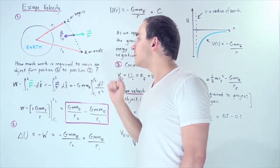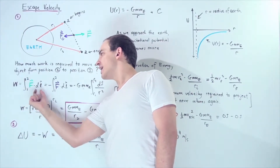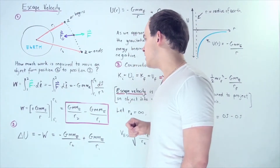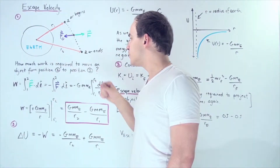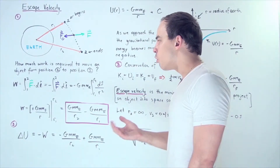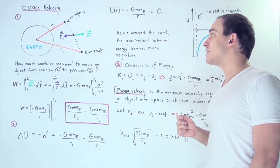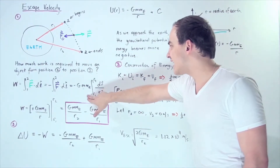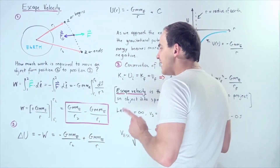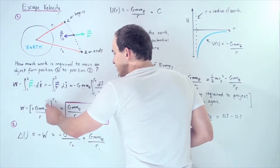The work done by the object going from position 1 to position 2 is equal to the integral from 1 to 2 of the dot product. The green force equals the negative of the purple gravitational force, so we plug in negative FG. Recall the law of universal gravitation gives us G times mass of the object times mass of the Earth divided by the square of the distance. Integrating this, the integral of 1 over R² gives negative 1 over R, so the negative becomes positive.